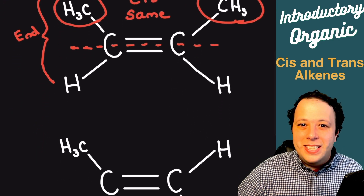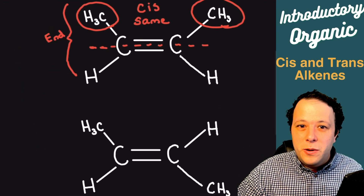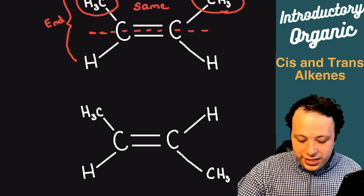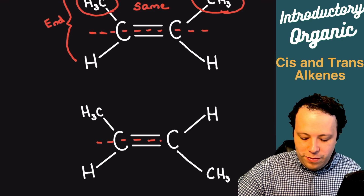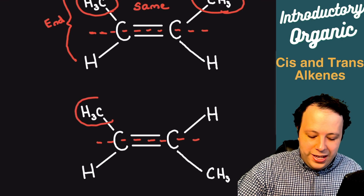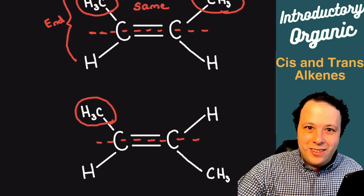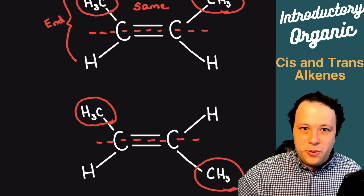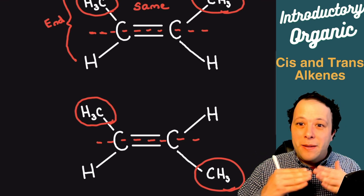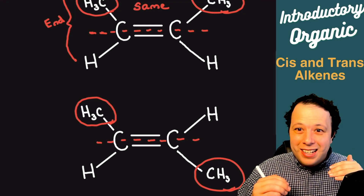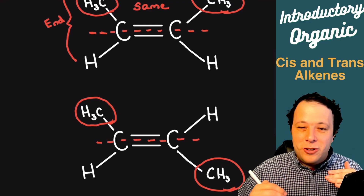Now if I go to the other option — well, if I have cis then I also have trans. I do the same idea: I draw my little dashes, and I see that one methyl is on the top and the other is on the bottom, so we have them on opposite sides of my railroad track.